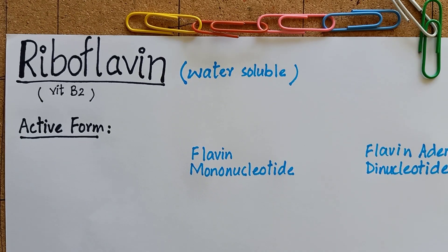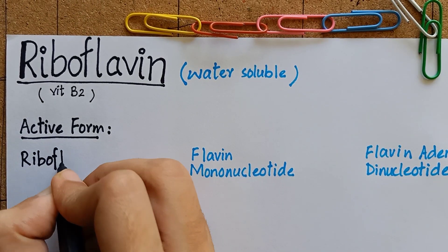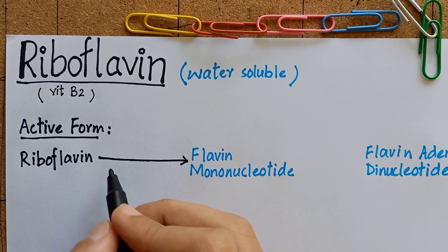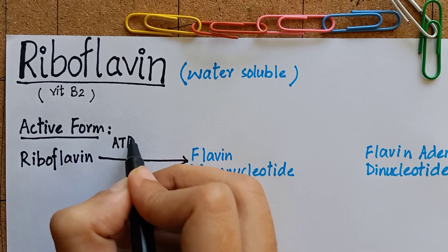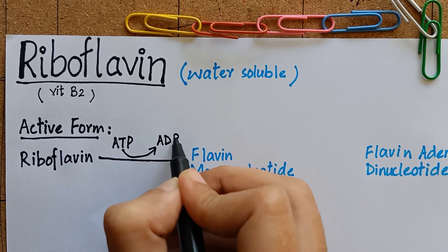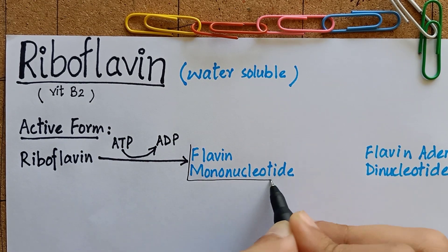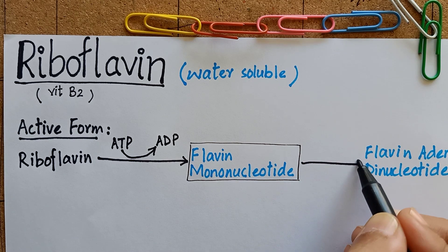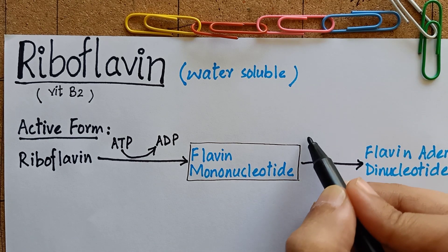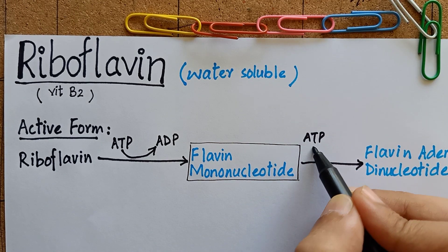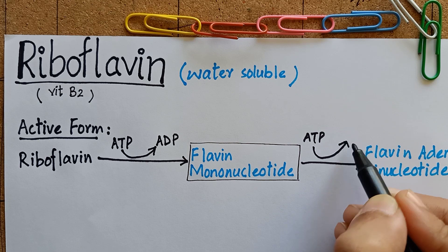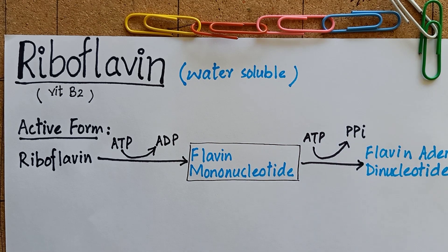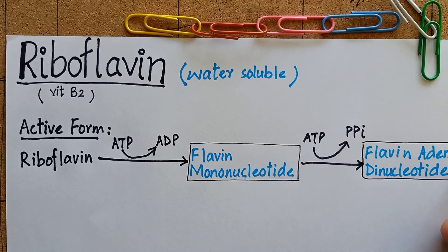When riboflavin receives a phosphate group from ATP, it becomes flavin mononucleotide. When an adenosine monophosphate moiety is added to flavin mononucleotide, it becomes flavin adenine dinucleotide.